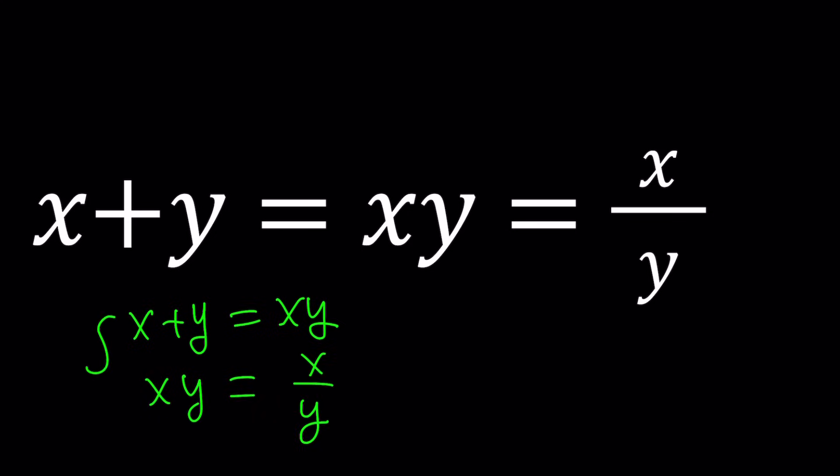We can write this as x plus y equals xy and xy is equal to x over y. So that becomes a system. You could also write it as x plus y equals xy and x plus y is equal to x over y. All these are going to give you pretty much the same thing.